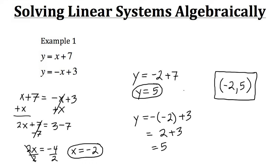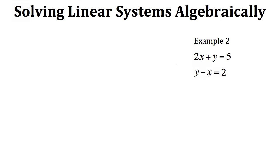Now let's take a look at another example of using the substitution method. Here with example 2, our system is 2x plus y equals 5, and y minus x equals 2. Here we don't have a variable already isolated for us, so we need to do that ourselves. Let's try isolating x this time, using the second equation. So we have y minus x equals 2.